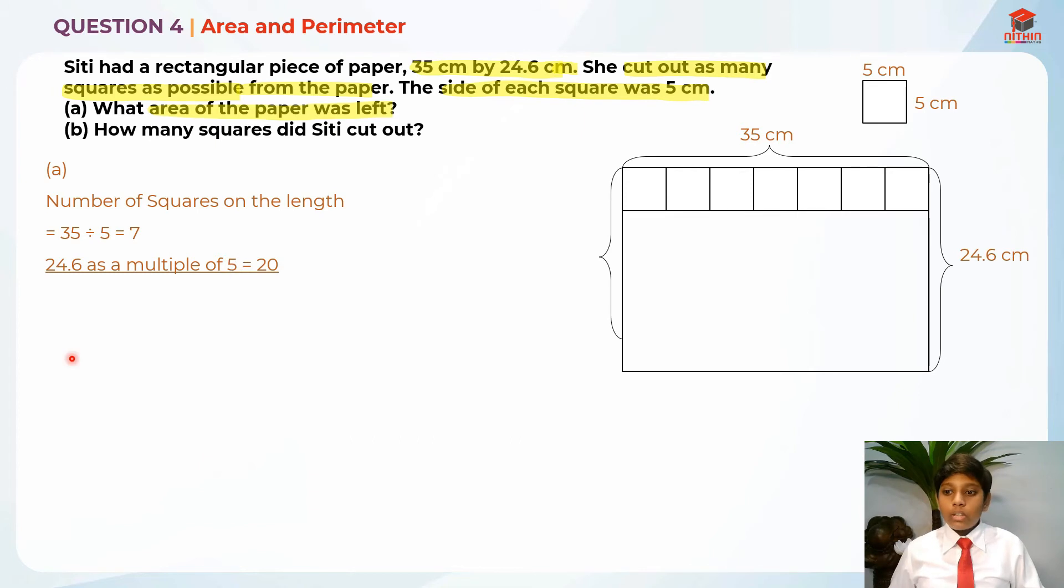So I'm going to take 20 cm over here. And this 20, I'll use this 20 to find the number of squares on the breadth.